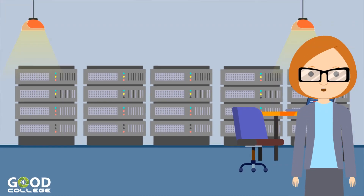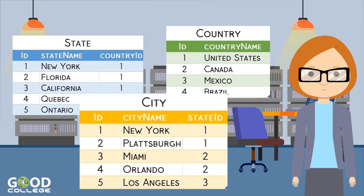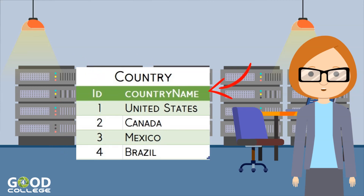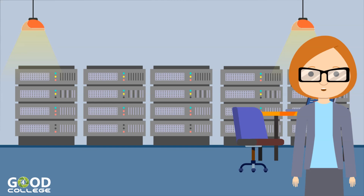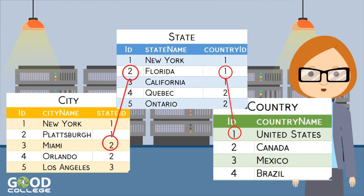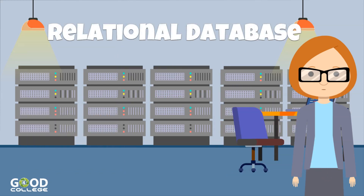A relational database is a tabular database in which data is organized and stored in tables. A table is a set of columns and rows, where the column describes the data and the rows keep the records. These tables can be connected through some common attributes called keys. Because of this relationship between tables, this database is named Relational Database.